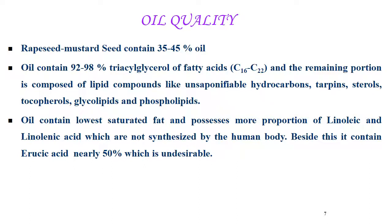Now coming to oil quality: the oil content in rapeseed or mustard is 35 to 45%. The oil is 92 to 98% triglycerides of fatty acids with carbon chain length 16 to 22. The remaining portion consists of unsaponifiable lipid components like hydrocarbons, terpenes, sterols, tocopherols, glycolipids, and phospholipids. The oil contains the lowest saturated fat and possesses a higher proportion of linoleic and linolenic acids not synthesized by the human body. Besides this, it contains erucic acid at nearly 50%, which is undesirable.